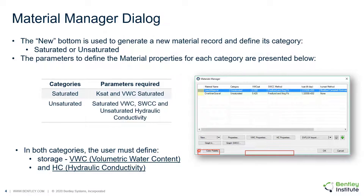The materials manager dialogue is used to enter any soils that can be assigned to regions in the model. Not all materials are required to be assigned to a region, and a single material can also be assigned to multiple regions. A new material can be selected to create either a saturated or an unsaturated material for the model. Under each material the user can enter the storage function and the hydraulic conductivity in either saturated or fully unsaturated terms.